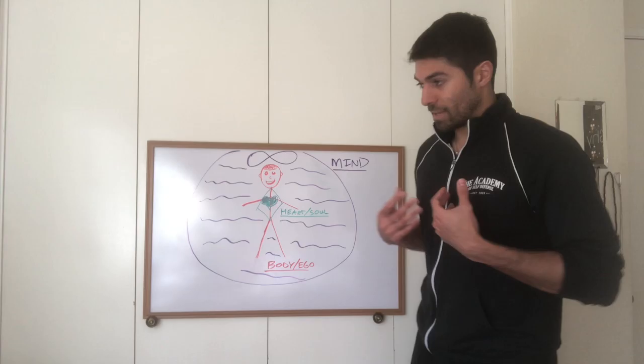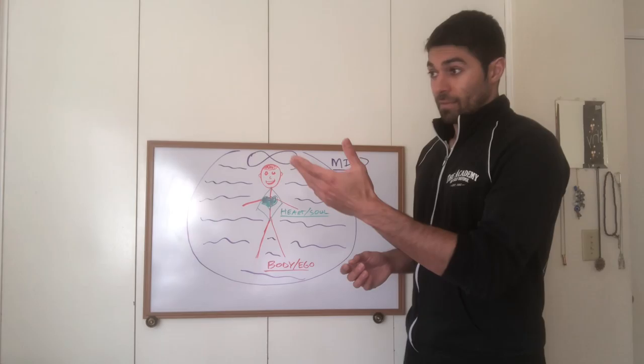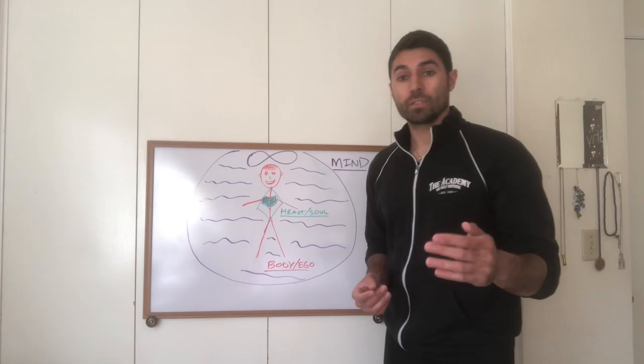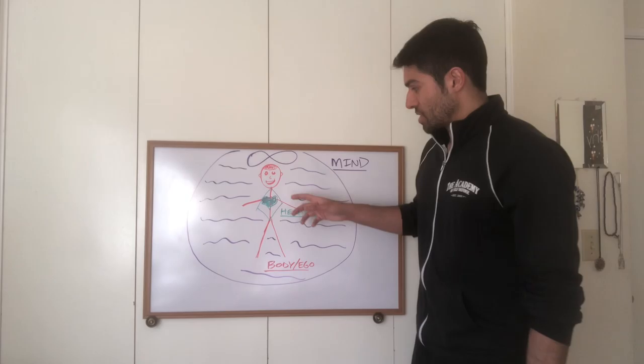So the heart, soul. First of all, the heart. We have the physical organ of the heart, which, according to the HeartMath Institute and other organizations, is shown to have an electromagnetic field 5,000 times greater than that of the brain. So it's considered a brain of its own.